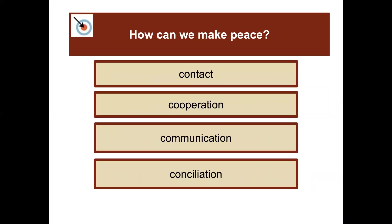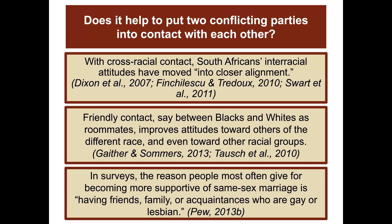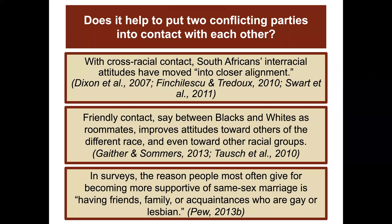How can we make peace? Four things can really help: contact, cooperation, communication, and conciliation. With cross-racial contact, South Africans' interracial attitudes have moved into closer alignment. Friendly contact between Black and white roommates improves attitudes toward others of a different race and even toward other racial groups. In surveys, the reason people most often give for becoming more supportive of same-sex marriage is having friends, family, or acquaintances who are gay or lesbian.